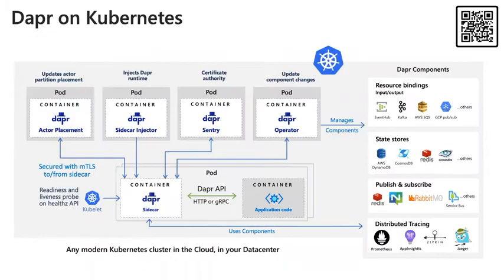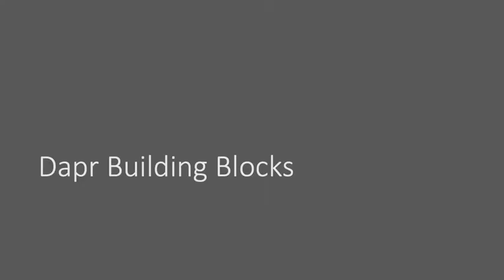On Kubernetes, Dapr tries to stay as light as possible — only two CRDs and four system pods. The sidecar injector checks for annotations and injects the sidecar into your pod. Sentry generates certificates for the sidecar and implements a rotation strategy. The operator tracks deployments and handles resource discovery and component registry. Actor placement identifies where actors are located and provides metadata for those actors, which can be rehydrated depending on where Dapr is running. There are also health APIs and liveness probes as you'd normally see in a Kubernetes deployment.